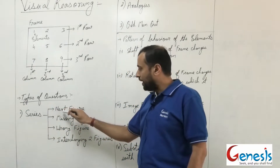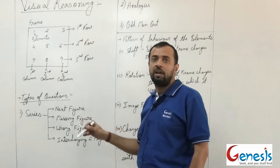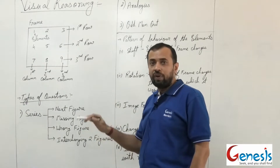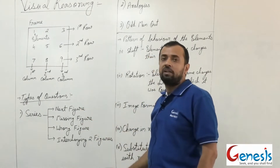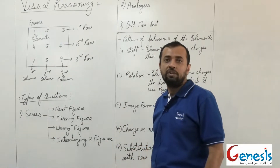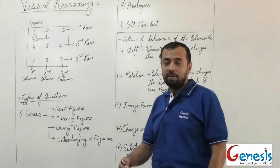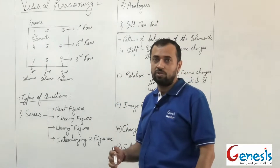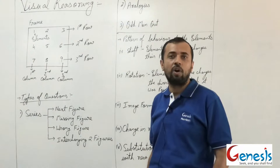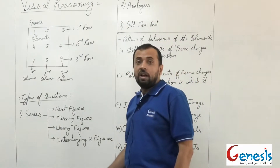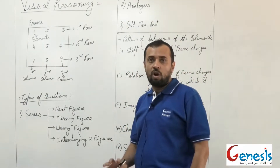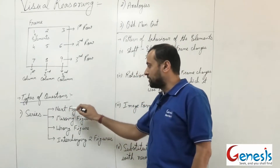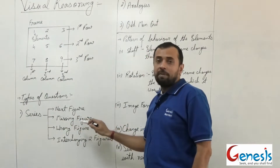Within the series type, questions can ask you to find the next figure in the series. Three or four frames are given and you need to find the logic, then identify what the next frame will be among five options. In MHCET, each question consists of five options, making elimination slightly tougher than in CAT where you had four options.